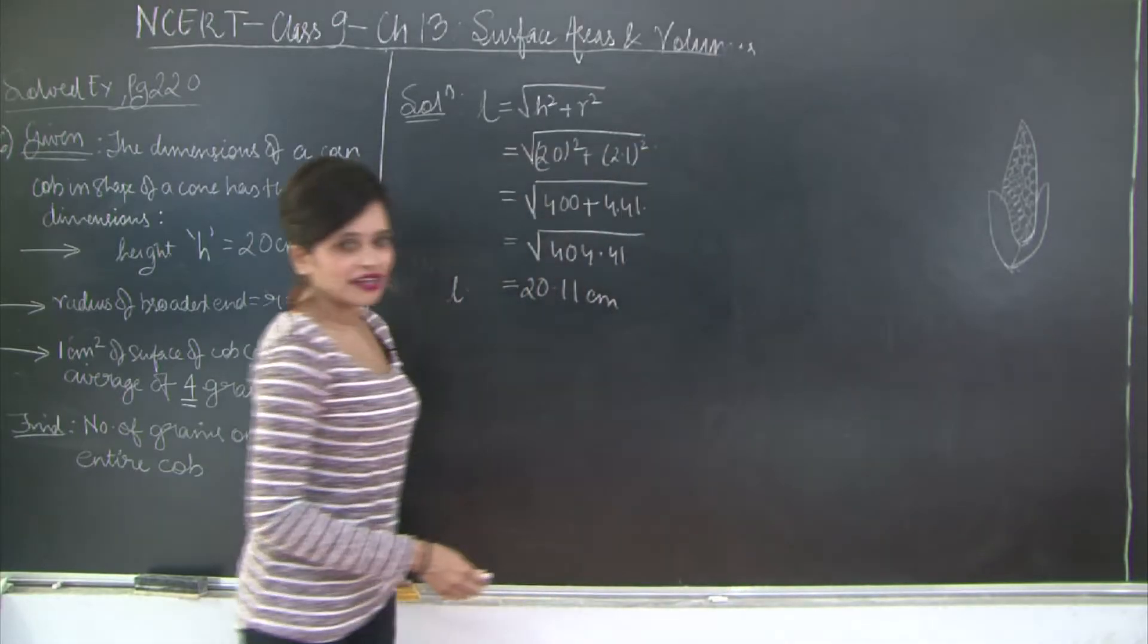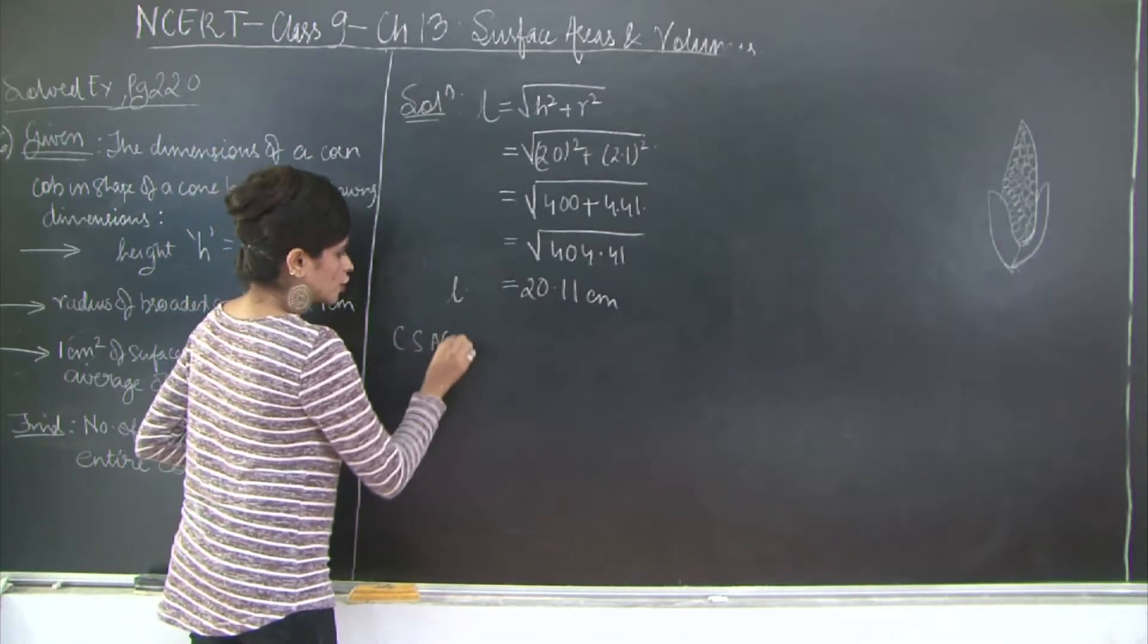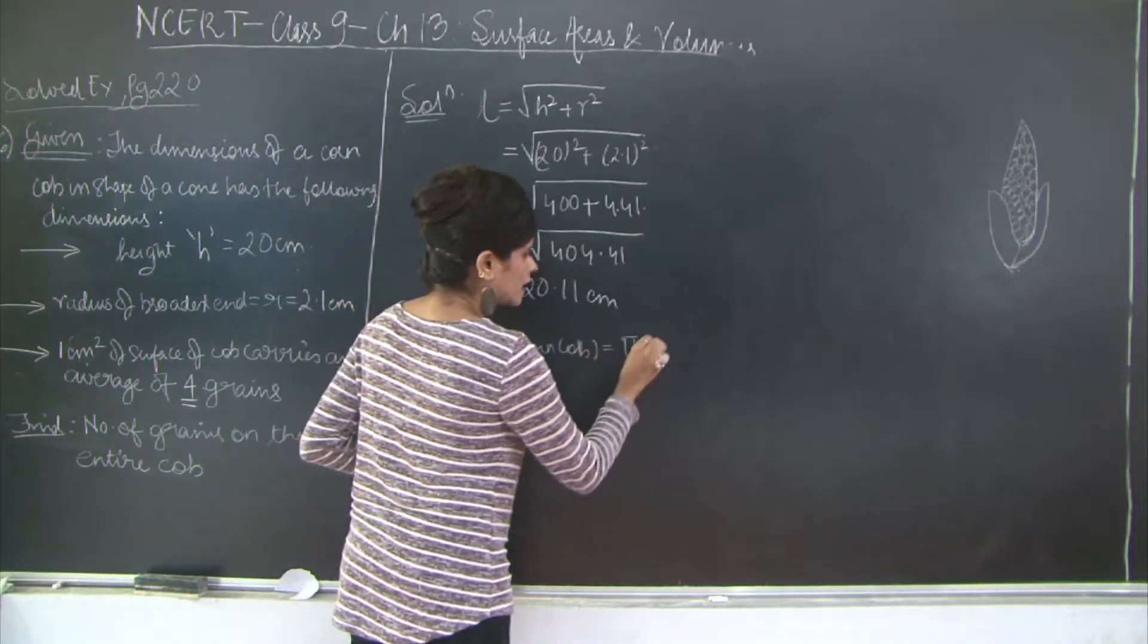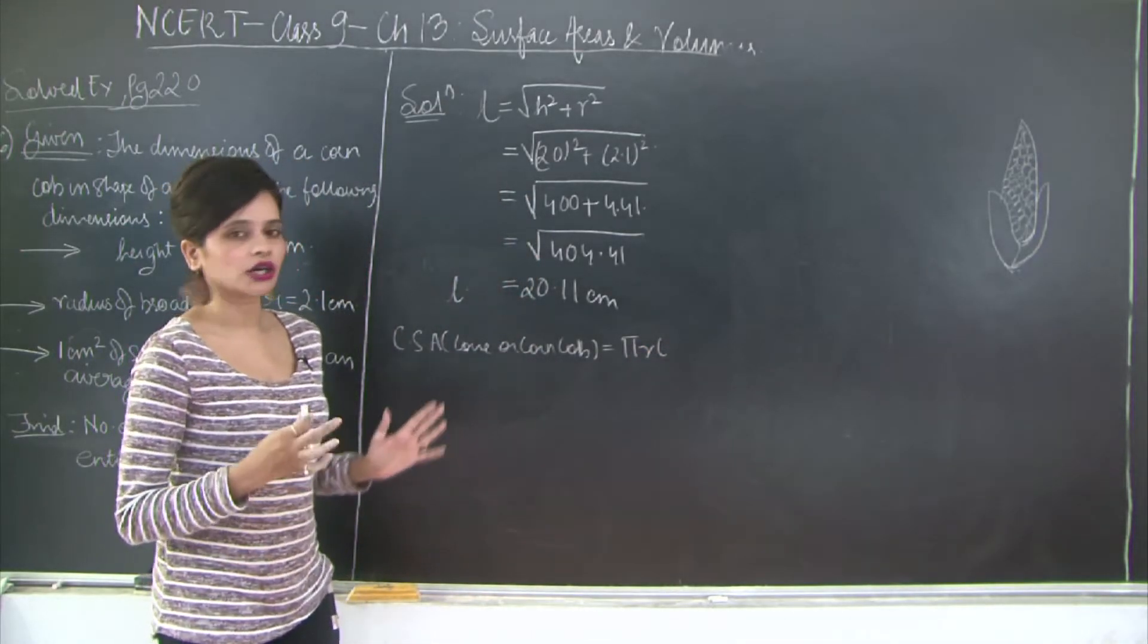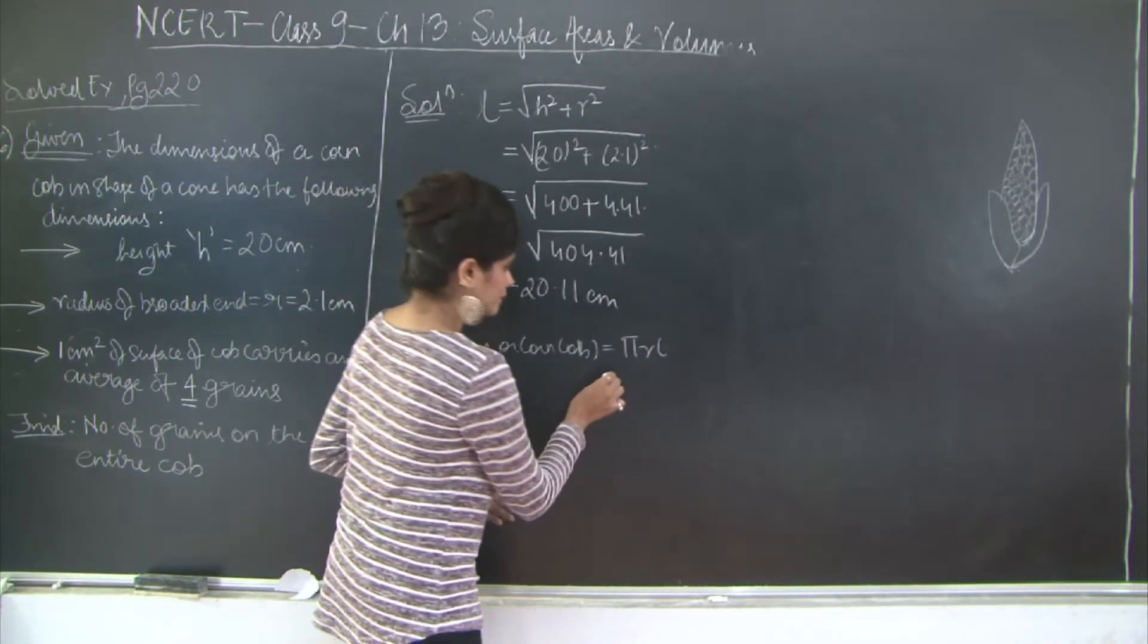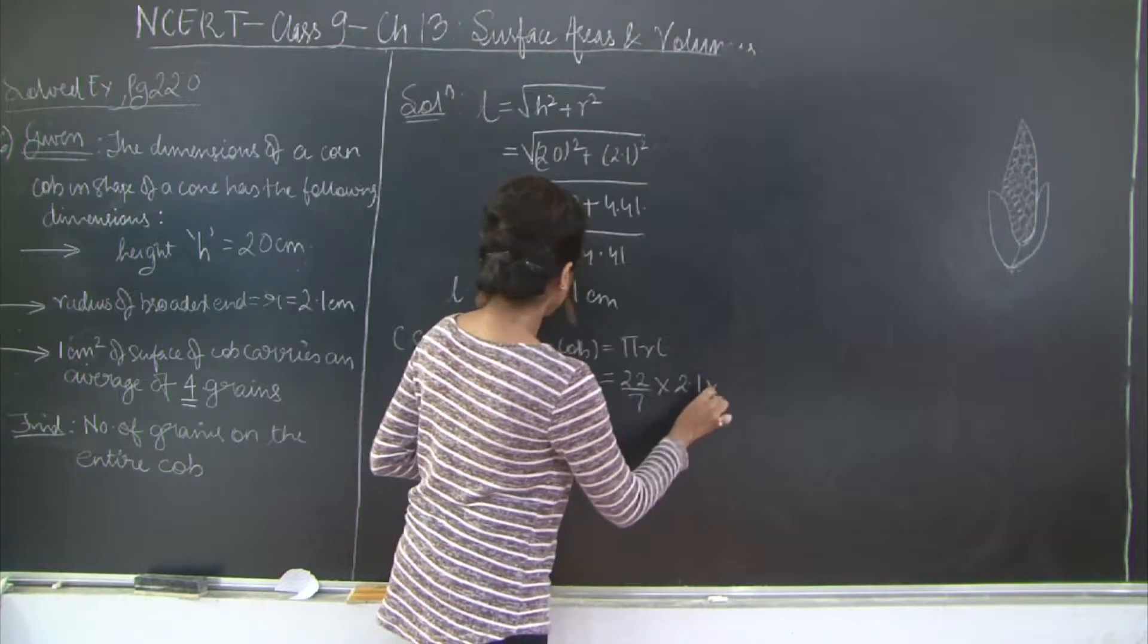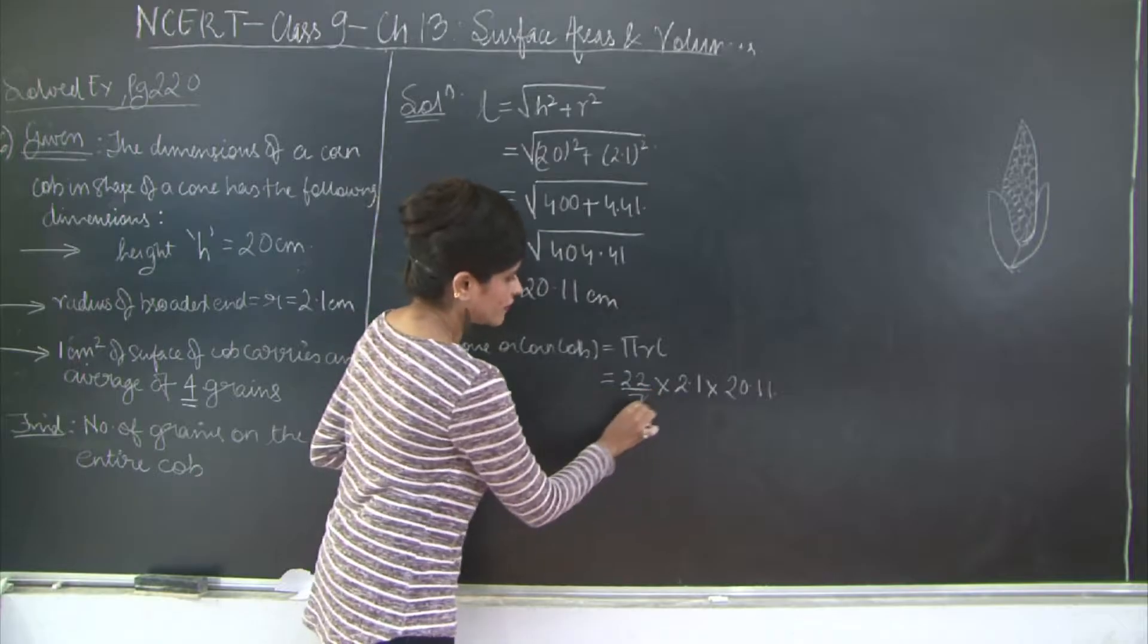So now we have the length. Let's go ahead and find the curved surface area. So I will say curved surface area of cone or corn cob is equal to πrl. Why we are finding the curved surface area once again? Because the grains are only going to grow in the curved surface area. At the base we do not have any corns growing. So this is 22 by 7, radius is 2.1, and length we found out to be 20.11.